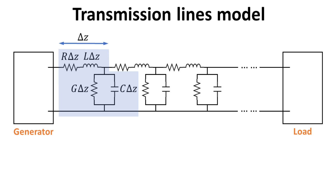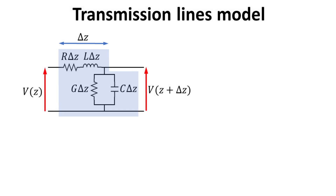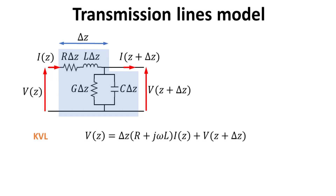Let's highlight the repeating unit of the circuit model as shown in blue. Since the unit is of length delta Z, the voltage across the transmission lines is given by V(Z) and V(Z plus delta Z) as shown. The current into and out at the two ends of this unit are also indicated, denoted as I(Z) and I(Z plus delta Z). Using Kirchhoff's voltage law, we can write down the relation between the voltages at the two ends in phasor representation.